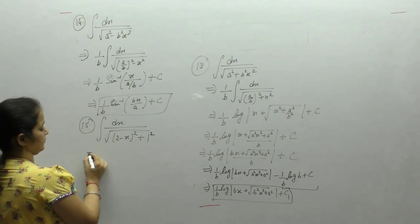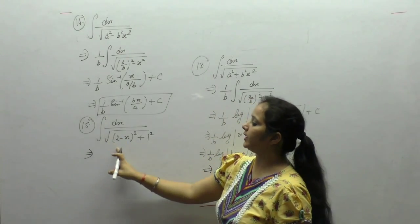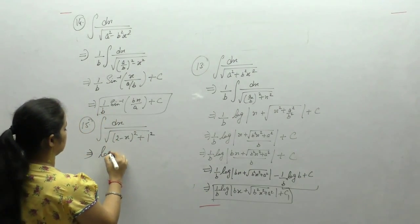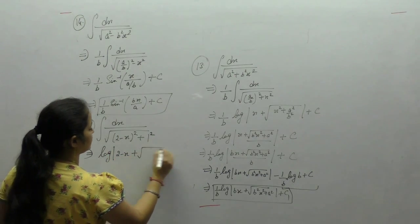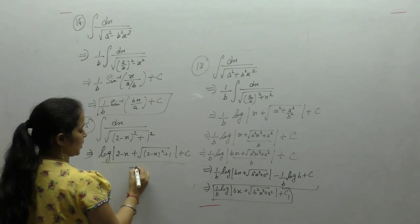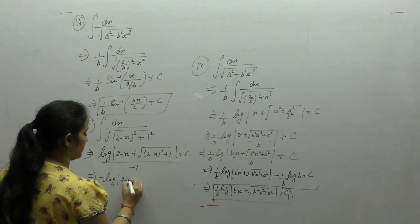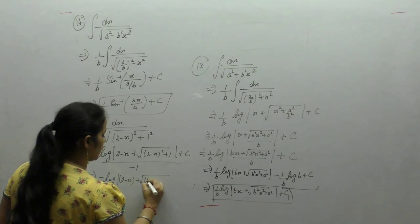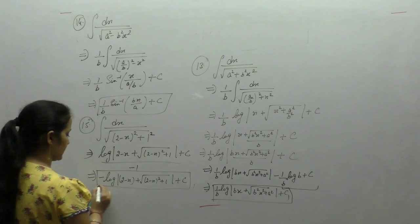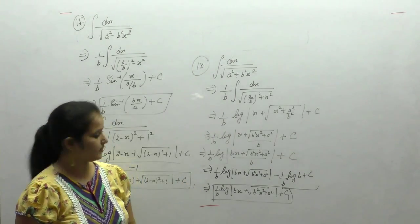We can write 1 as 1 square. Now apply the formula directly: integral of 1 upon square root of (x square plus a square) equals log of (x plus square root of x square plus a square). But here the coefficient of x is minus 1, so minus 1 in the denominator. Result: minus log of (2 minus x plus square root of (2 minus x) whole square plus 1) plus c.